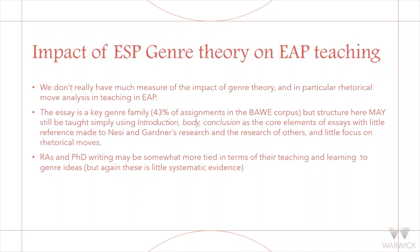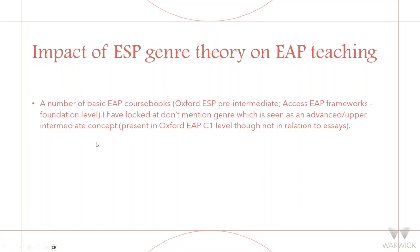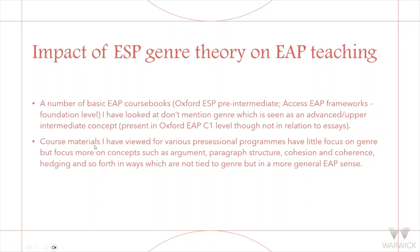It's easier to do this with research articles and PhD writing, but there's little systematic evidence. So we might teach about stance, paragraph structure, use of conjunction, argument structure, citation, format, topics, sentences — all that kind of stuff. To what extent are we tying these to genre analysis? A number of basic course books don't have much about genre in them. Maybe that's because at lower levels people don't want to focus on it, but language always exists in context.